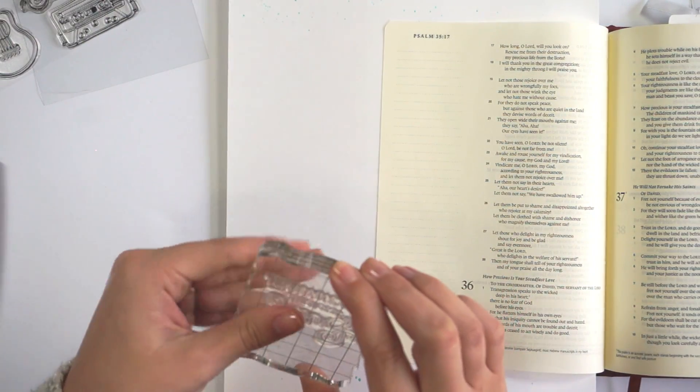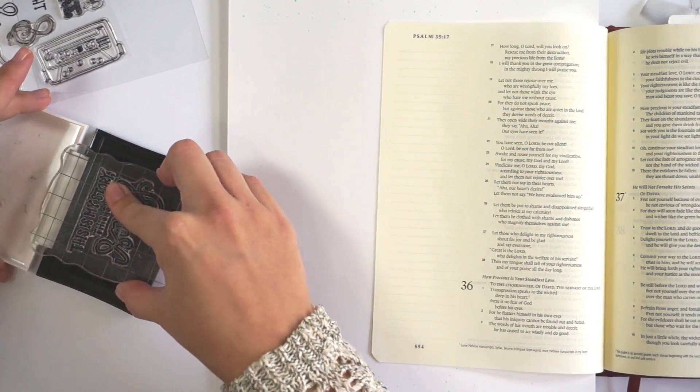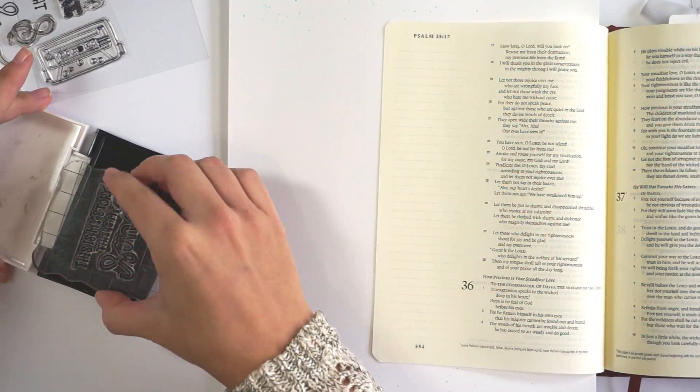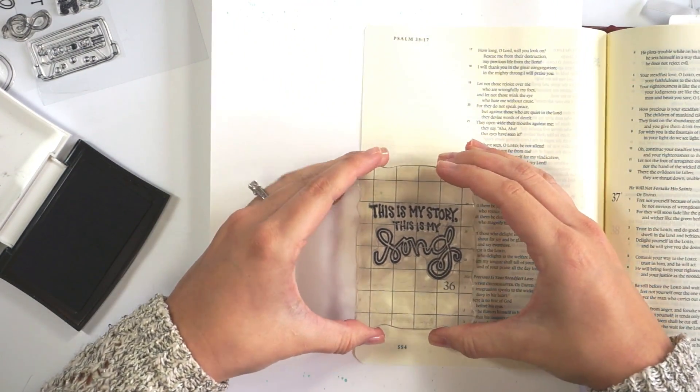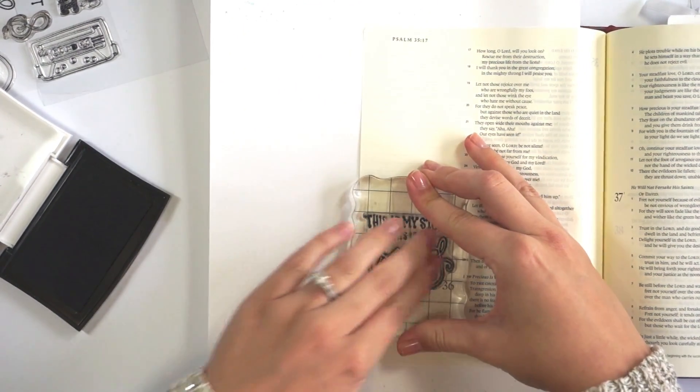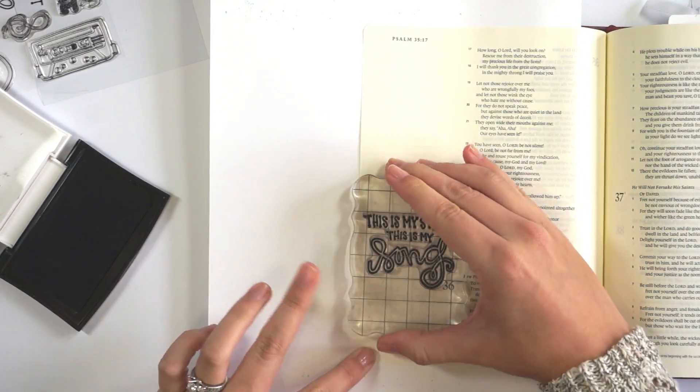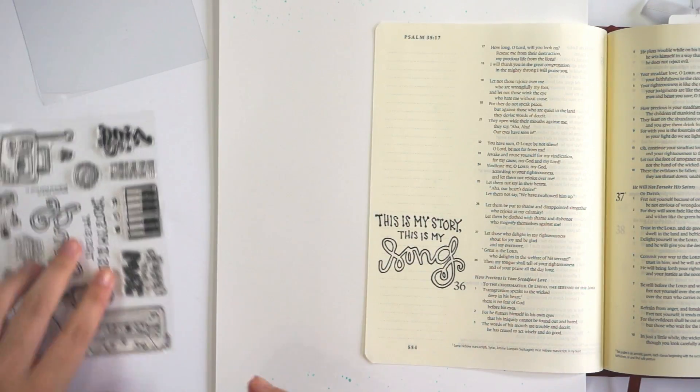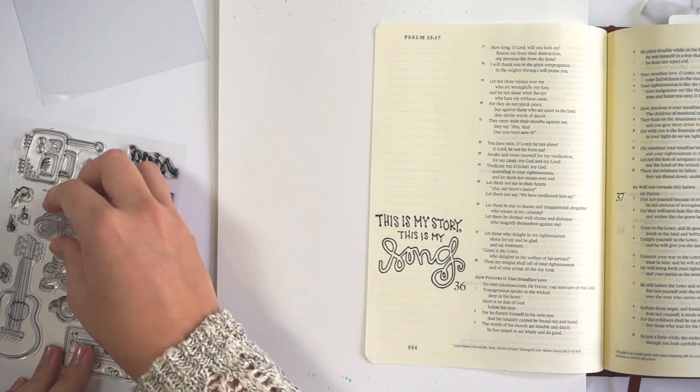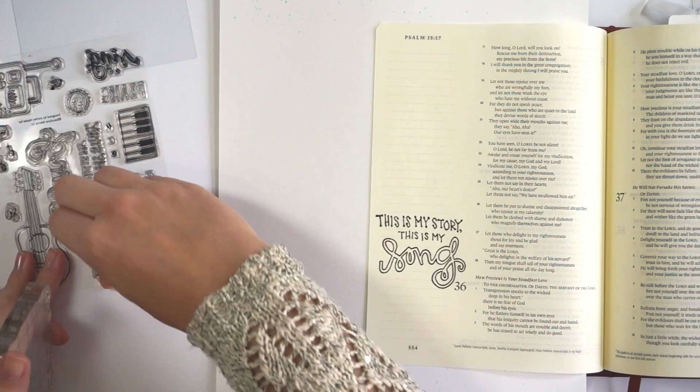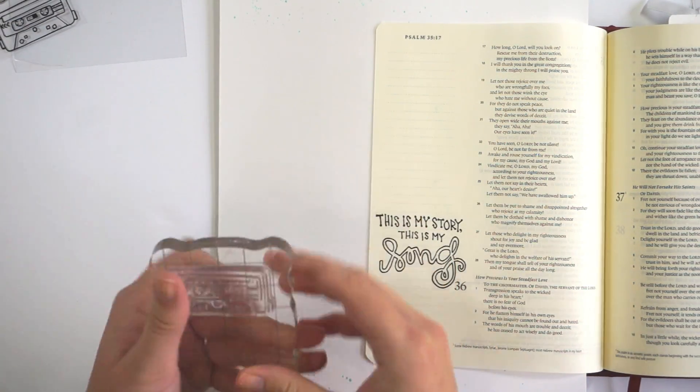I'm working in Psalm chapter 35. Verse 26 says 'then my tongue shall tell of your righteousness and of your praise all the day long.' I've gone ahead and attached those two stamps onto my block and I'm stamping with VersaFine Onyx Black ink. This ink does bleed through my Bible page. My Bible page is not prepped. I just deal with bleed-through by covering it up with some white acrylic paint or something like that, so I don't get too concerned about bleed-through.